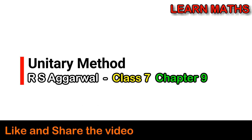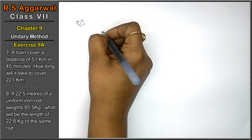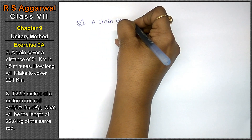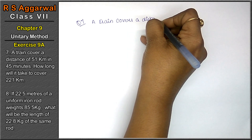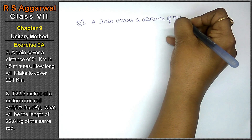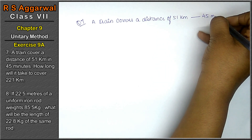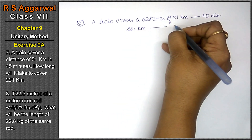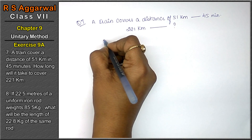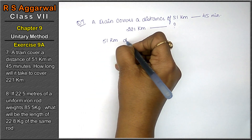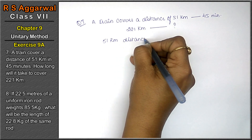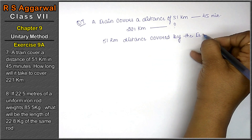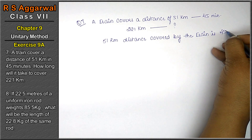Let's do question number 7 of unitary method, that is exercise 9a. A train covers a distance of 51 km in 45 minutes. How long will it take to cover? So, 51 km distance is covered by the train in 45 minutes.